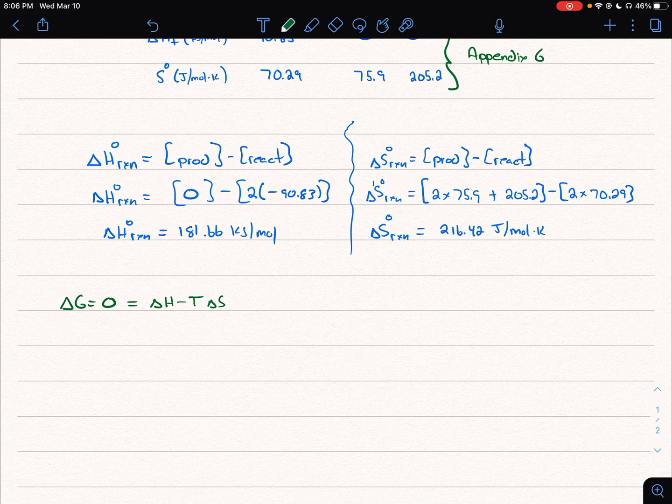And so we can then rearrange our equation, and we can have delta H equals T delta S, and then T is equal to delta H over delta S.